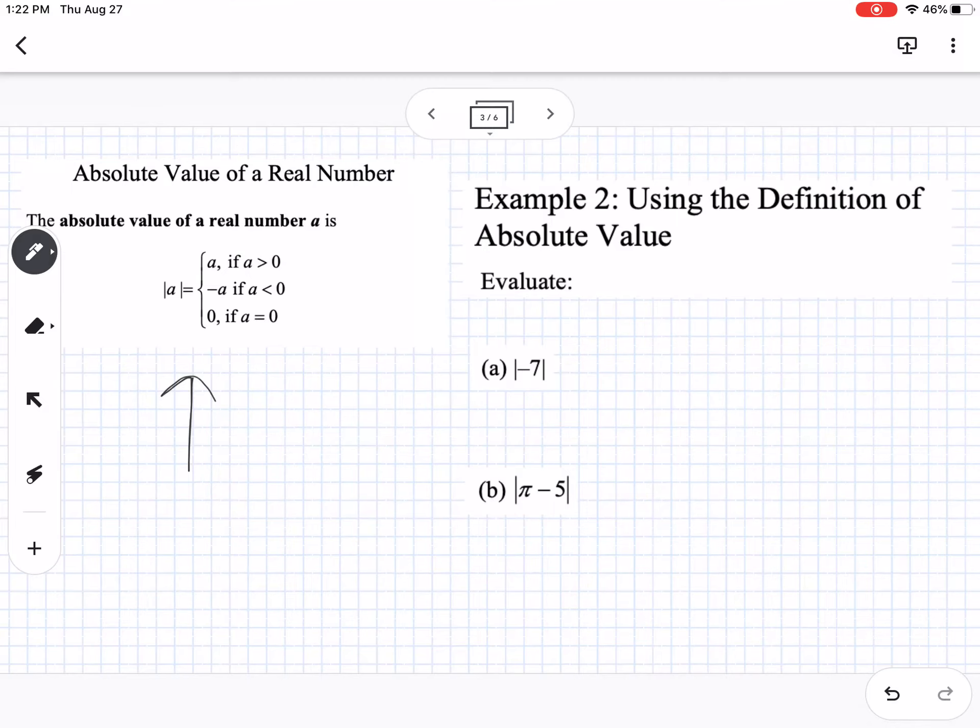So a couple examples here using the definition of absolute value. So negative seven, how far is negative seven away from zero? It's seven.